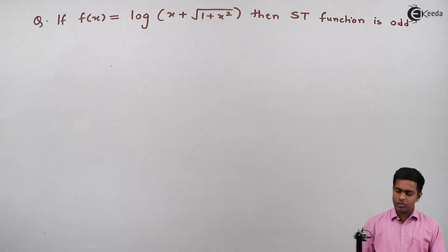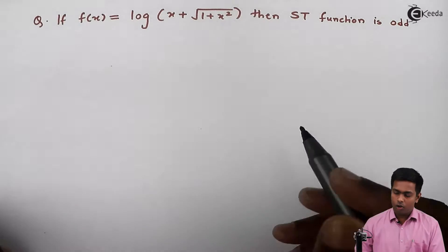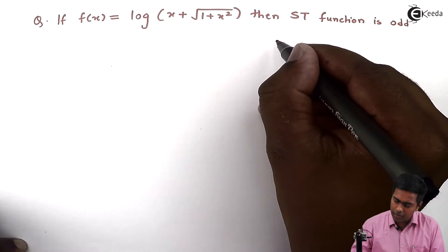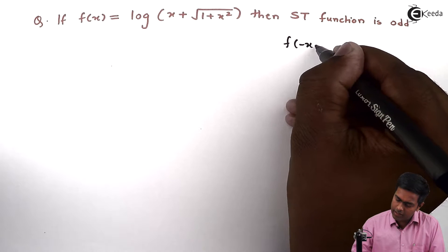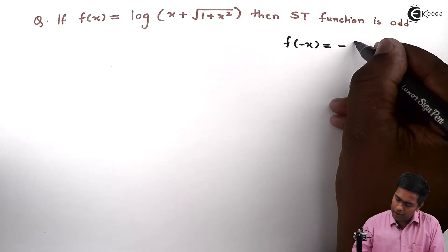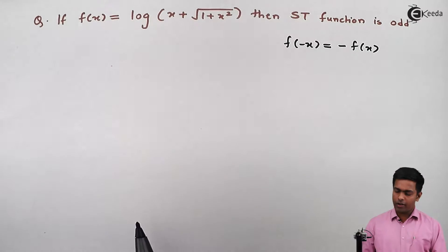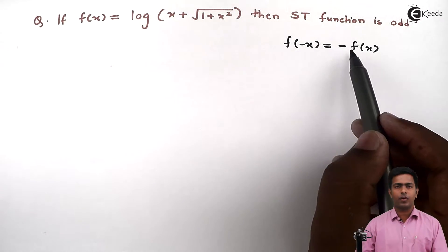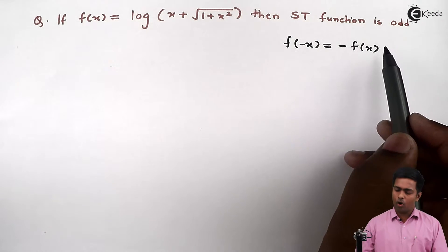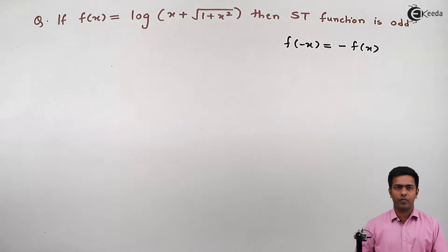Before starting this, let us understand what is an odd function. An odd function is one where the condition f(-x) = -f(x) is satisfied. Whenever we get this condition, f(-x) equal to -f(x), in all those cases we say that f(x) is an odd function.